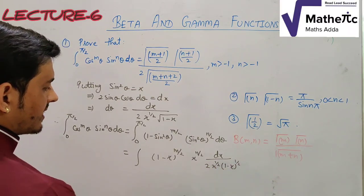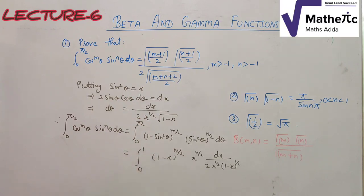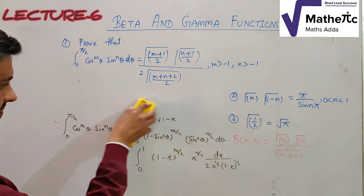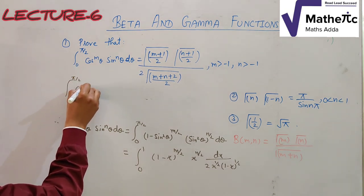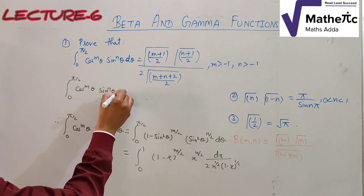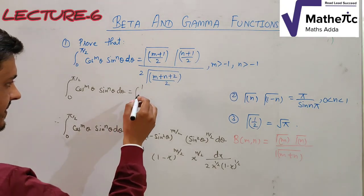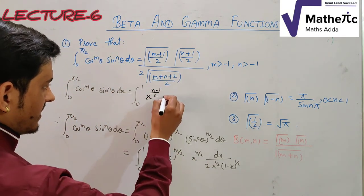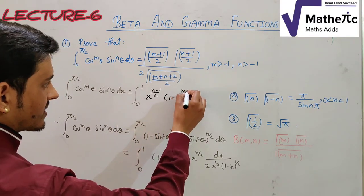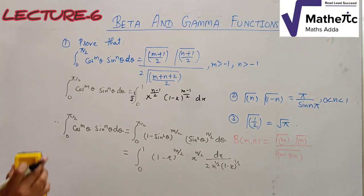The limits change as follows: when θ = 0, sin0 = 0 so x = 0; when θ = π/2, sin(π/2) = 1 so x = 1. The integral becomes ∫₀¹. Simplifying, the factor of 2 comes out, and we combine the powers: x^(n/2) · x^(1/2) gives x^((n+1)/2 − 1), and (1−x)^(m/2) gives (1−x)^((m+1)/2 − 1), with an overall factor of 1/2 outside.